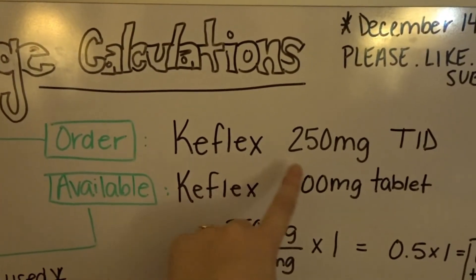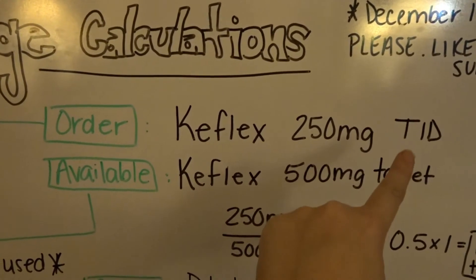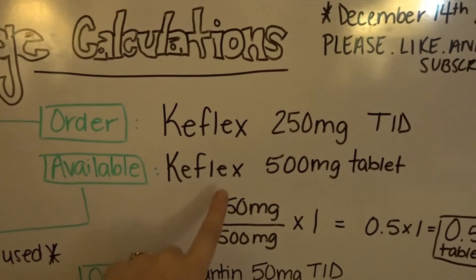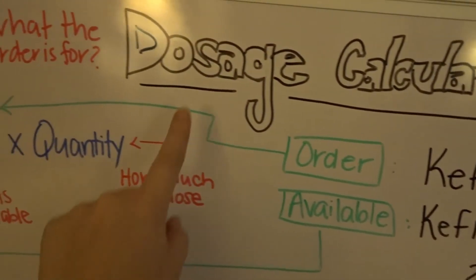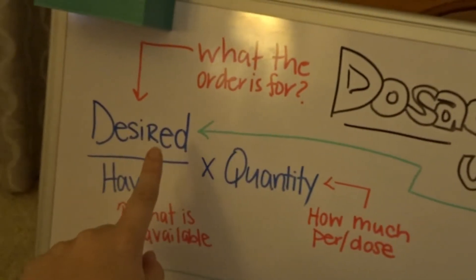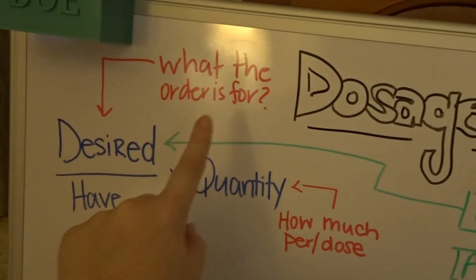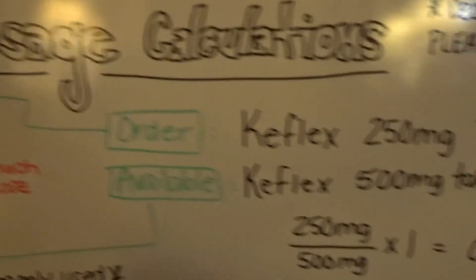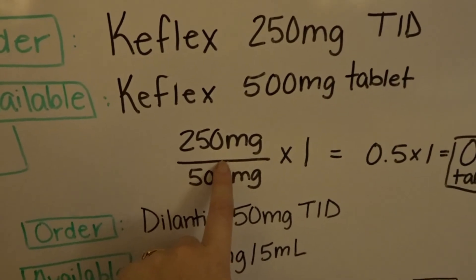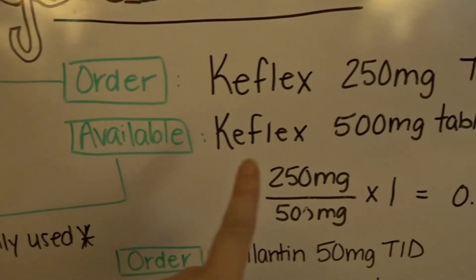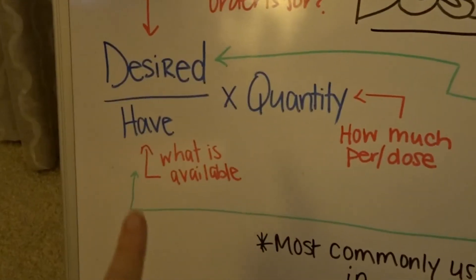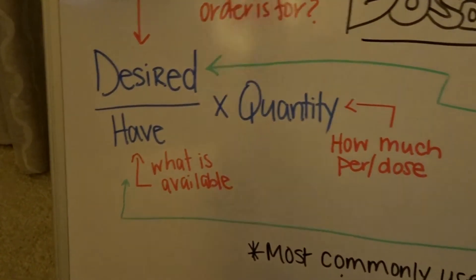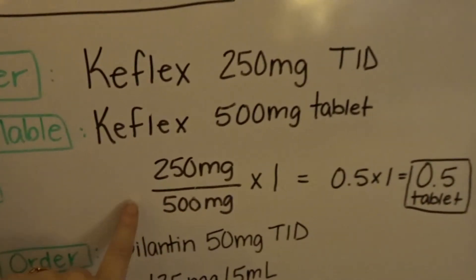Our order is for Keflex 250 milligrams three times a day. Available is Keflex 500 milligrams in a tablet. So our order, if we follow our formula, is our desired — which is what the order is for — so that's going to be the first part of our problem. The available Keflex 500 milligrams in a tablet is our 'have,' so that's what's available, and we know that's going to go on the bottom of the equation.